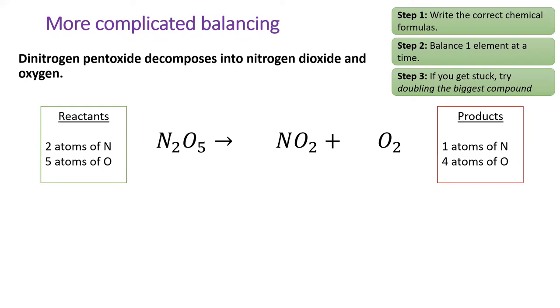Since we have two Ns on the left and only one on the right, I'll put a 2 in front of nitrogen dioxide. This gives us the right number of nitrogen atoms, but the number of oxygens is still incorrect. However, I feel kind of stuck. The left side has five atoms of oxygen, but on the right side, we can only add oxygen in increments of two.